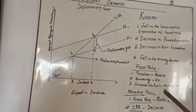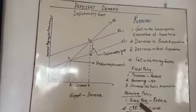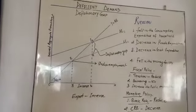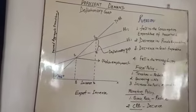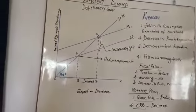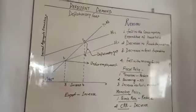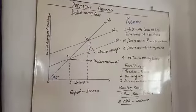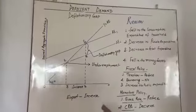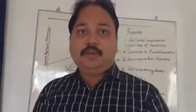Monetary policy is taken by the RBI — the Central Bank of our country. Bank rate is going to be reduced so that commercial banks can provide loans at a low rate of interest, increasing consumption. Keep these points in mind for your exam — they are very important for your coming council exam. Thank you.